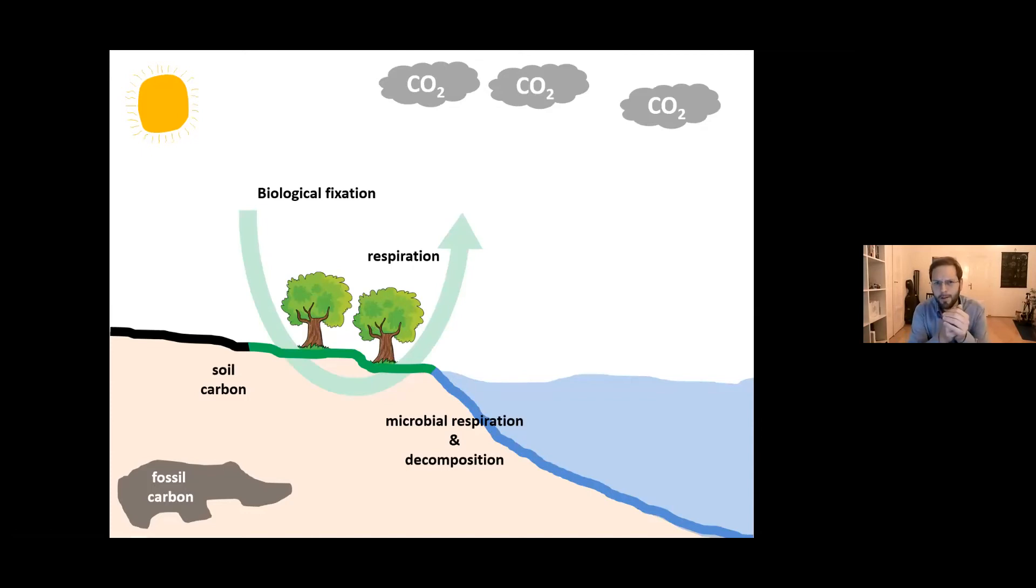Natural and seasonal changes in the levels of carbon dioxide are normal and occur throughout the year. Each year we see an increase in carbon dioxide levels during autumn and winter, which will decline again when photosynthesis is increasing during spring and summer.